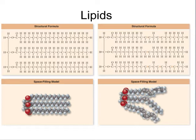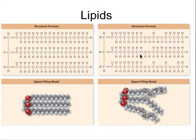Lipids can be either saturated, as shown here. They're saturated because every possible bond of carbon is saturated with a hydrogen or another carbon. They can also be unsaturated, and that is when there are bonds that could be saturated with hydrogens but are not, resulting in a double bond between carbons. For example, here we have an unsaturated fatty acid with a double bond between two carbons, and here we have a polyunsaturated fatty acid with two double bonds between the carbons.